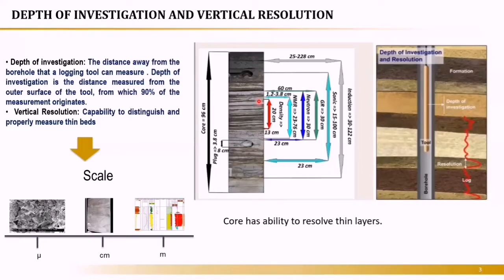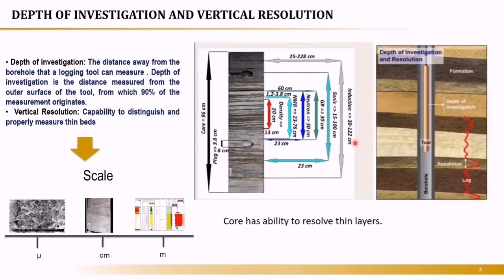The vertical resolution is the ability of the tool to measure these small beds. The induction tool has very poor vertical resolution because it measures all small beds as one averaged resistivity. Comparing the induction tool with the density tool: the density tool still can't discriminate some thin beds, but it's much better in vertical resolution. As depth of investigation increases, vertical resolution decreases. The induction tool has the worst vertical resolution, while the density and NMR tools have the best for the triple combo.